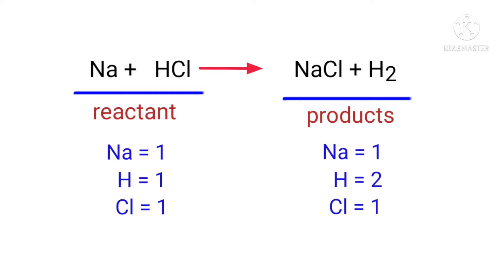The number of atoms are not balanced on both sides. To balance the chemical equation we need to make use of coefficients. A coefficient is a number that we place in front of a chemical formula. In this equation we need to balance the hydrogen atoms, so we put a coefficient of two in front of HCl.